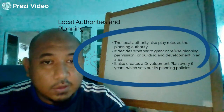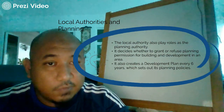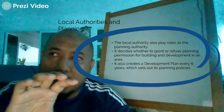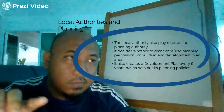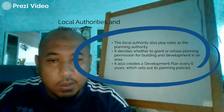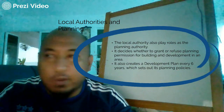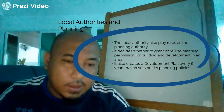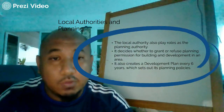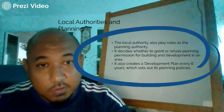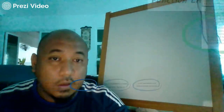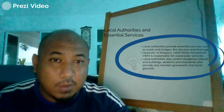Regarding planning, the local authority plays a role as the planning authority. They decide whether to grant or refuse planning permission for buildings and development in the area. Their function is to create a master plan for the area, categorizing which areas are designated for industrial, commercial, or residential use. It also creates a development plan every six years which sets out planning policies.